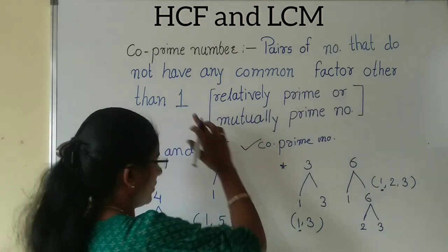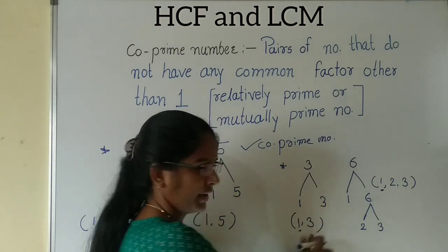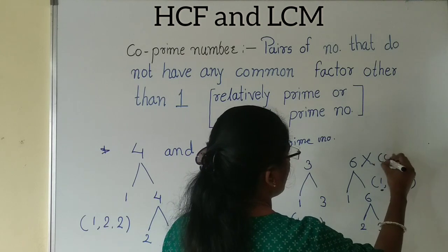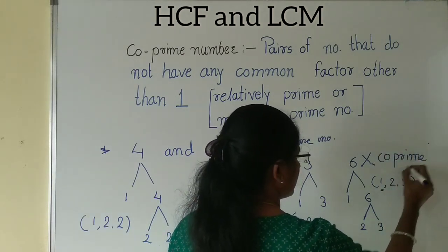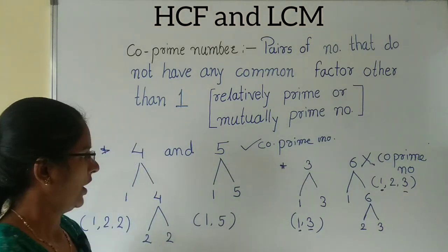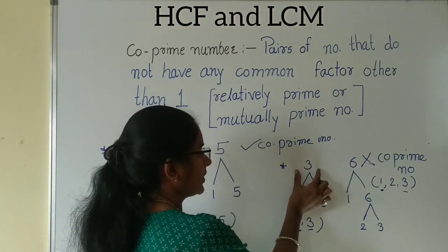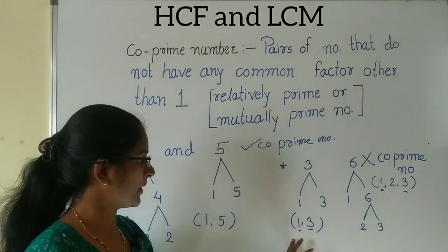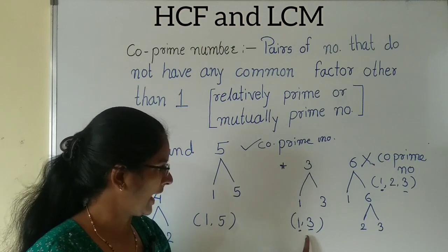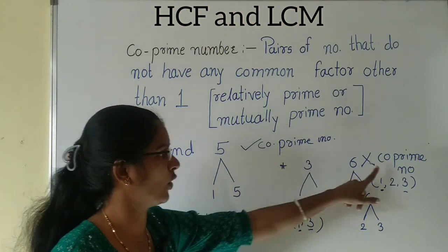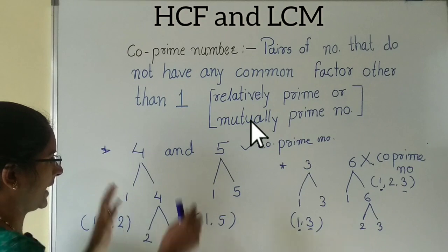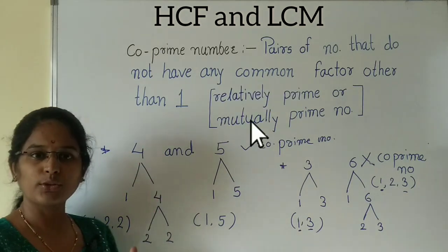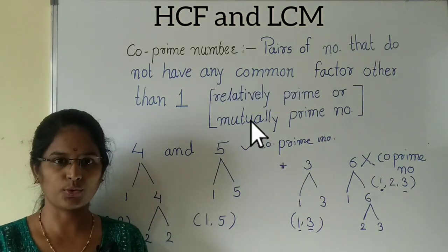Here, 1 is common, but other than 1, we also get 3 as a common factor. 3 appears in both factor lists. Means this is not a co-prime number, because when we find the factors of 3 and 6, we get common factors 1 and 3. That's why this is not a co-prime number. In this way, we can learn which numbers are co-prime and which are not.